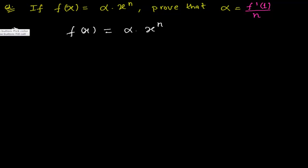So let me differentiate both sides with respect to x. So what will happen? I am just differentiating. I am finding the derivative with respect to x. So it will be d/dx f(x) and here also d/dx, that is alpha times x to the power n.